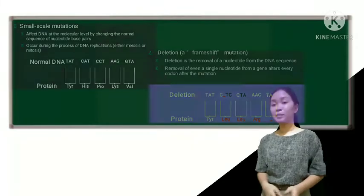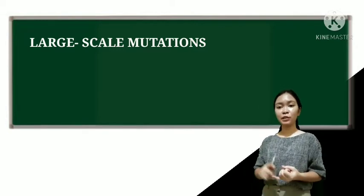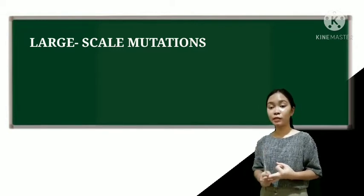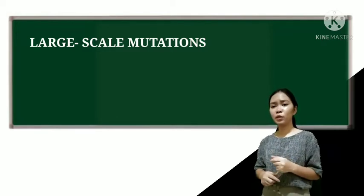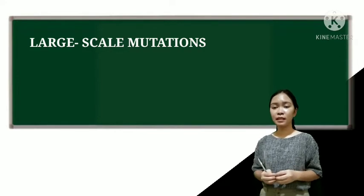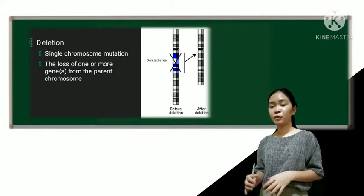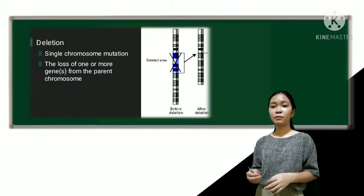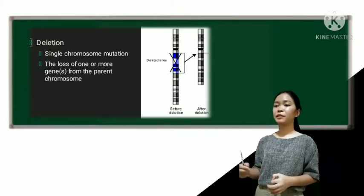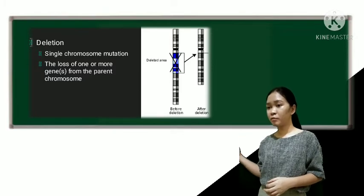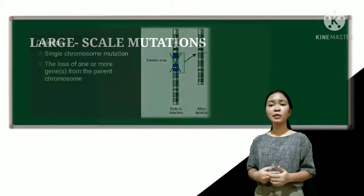Okay, so let's move to the large-scale category. So we have at least six mutations. We have the deletion, duplication, inversion, insertion, translocation, and non-disjunction. So to start with, we have the large-scale deletion. So this is a single chromosome mutation involving the loss. So the term here is the loss of one or more genes from the parent chromosome. So as you can see in the picture, we have here the picture of before deletion and after deletion.